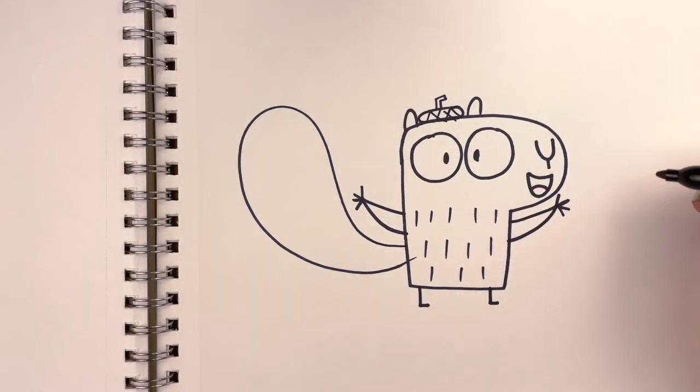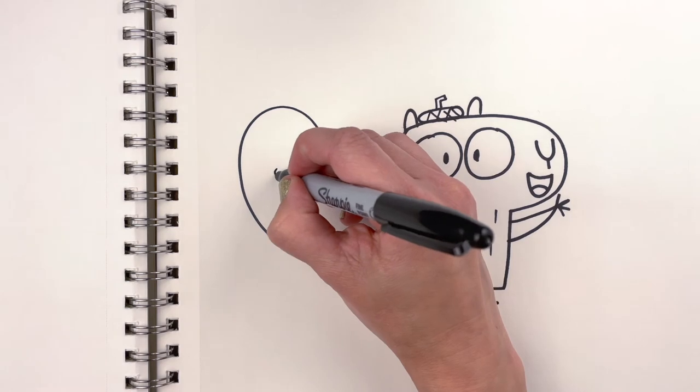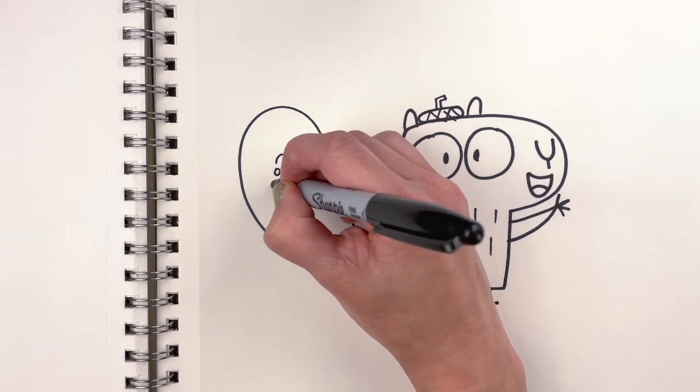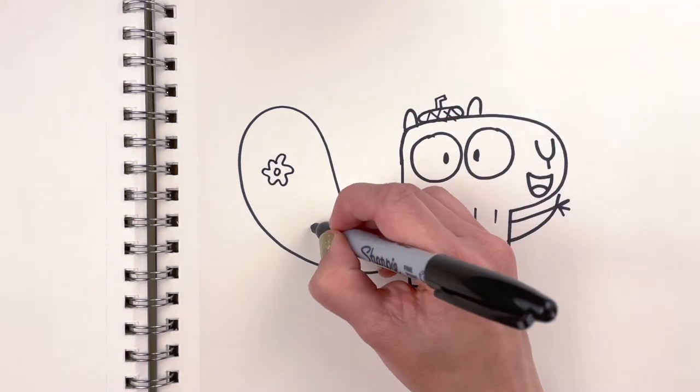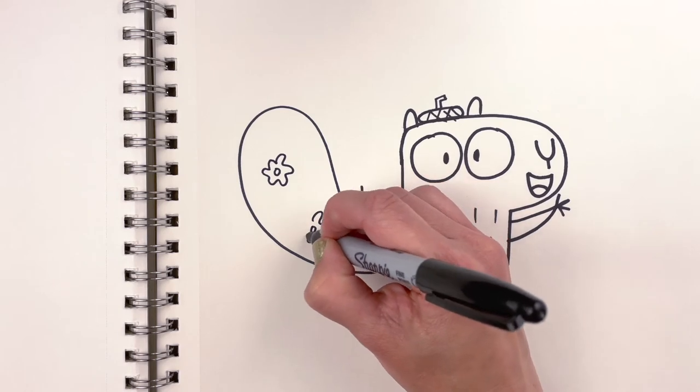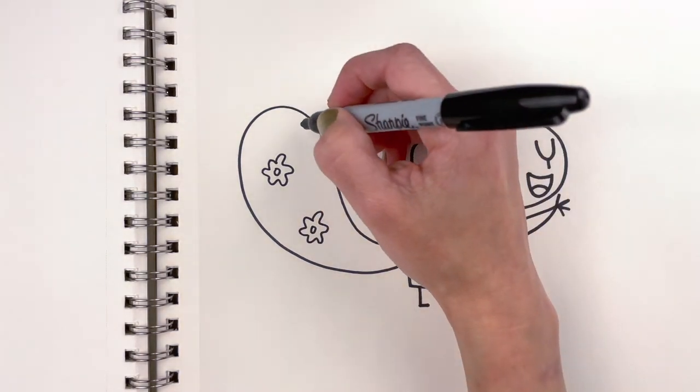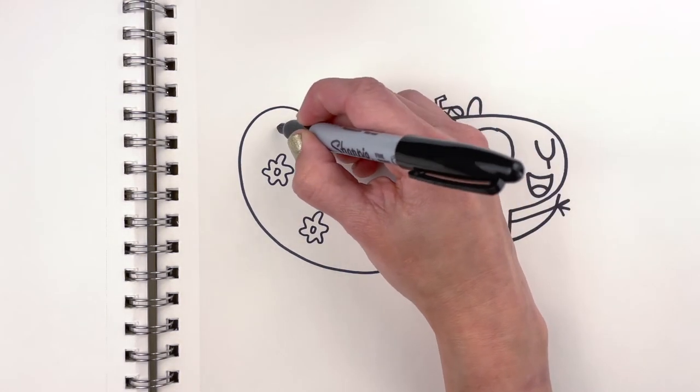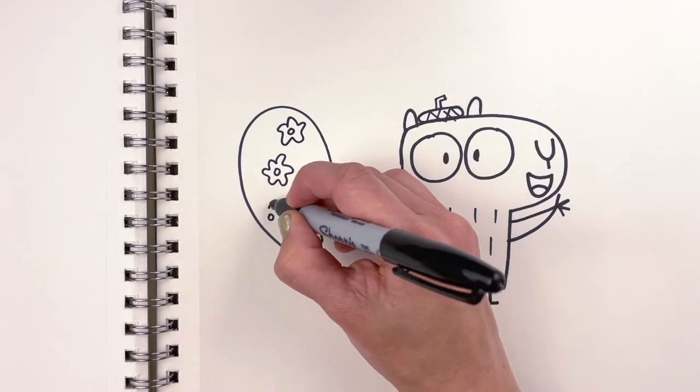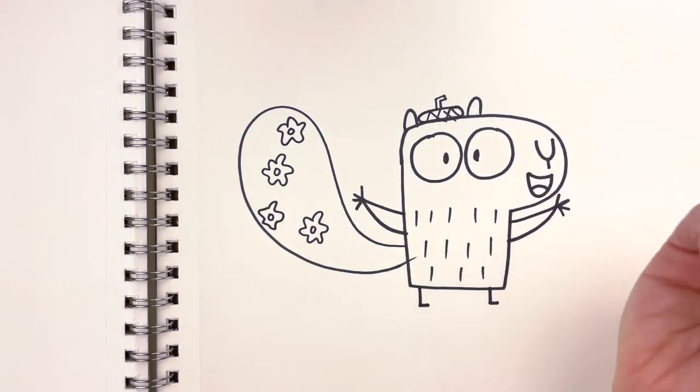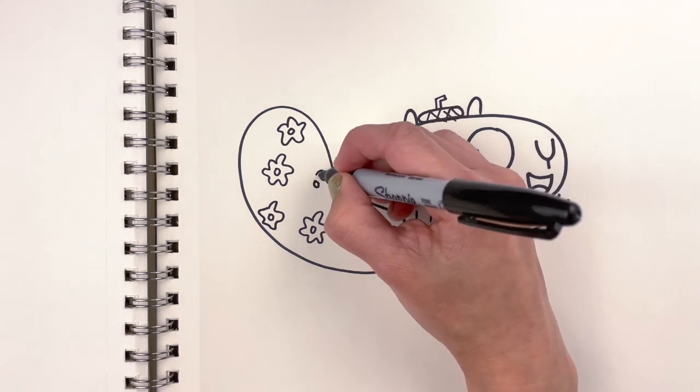Awesome and then I also want to draw some like flowers in his tail. I think that would be cute. That's what squirrels do in spring right? They just put flowers just in their tails. I would. I love it.